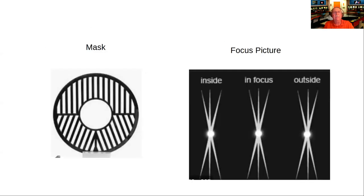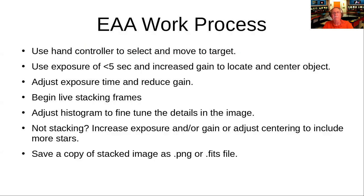For those who haven't used a Bahtinov mask: this one for the Celestron has a hole for the secondary mirror, and you place it over the corrector plate. When you look at a star you see a diffraction pattern, and when it's in focus the middle spike splits the two side spikes. SharpCap has a function that analyzes this focusing image and gives directional feedback — a measure you try to minimize by moving the focus — but I find my eye is good enough.